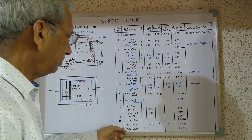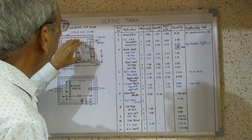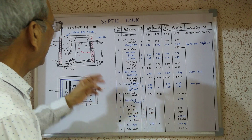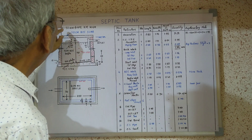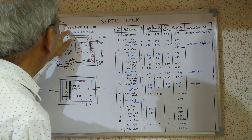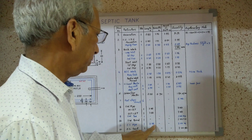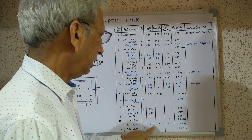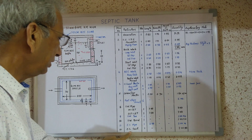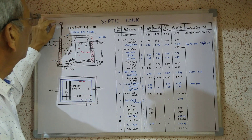Next item is CI pipe for the gas ventilator. Gas is developed inside the septic tank and must escape, so we have fitted a CI ventilation pipe of 50 mm diameter. The length of this pipe is 2 meters — one number, 2 meters. The last item is one number CI cow (cap) fitted on top of the CI pipe.